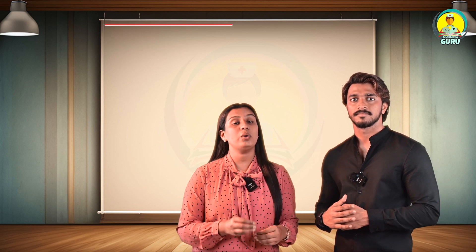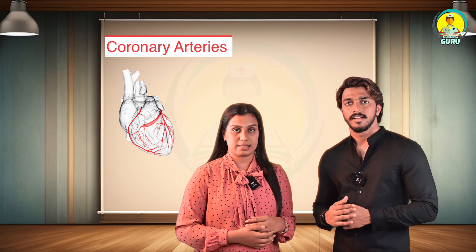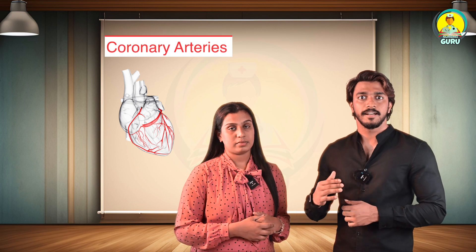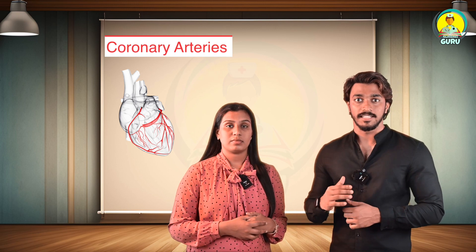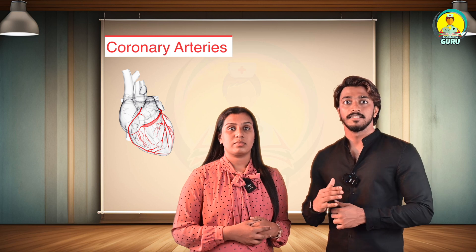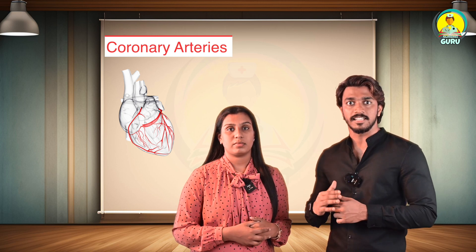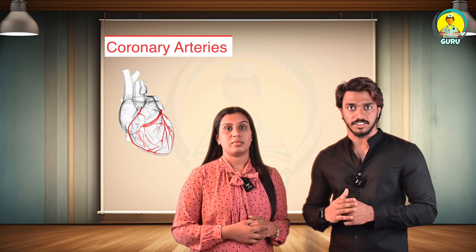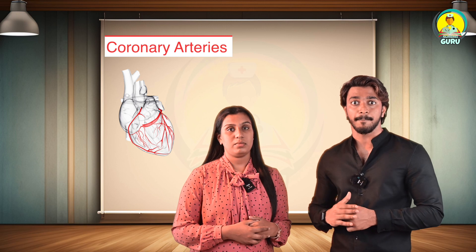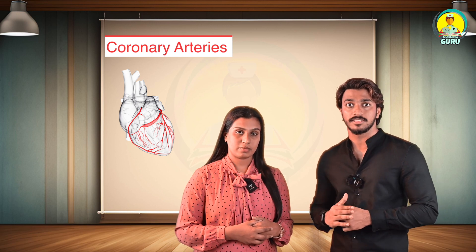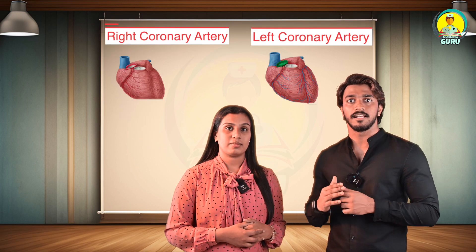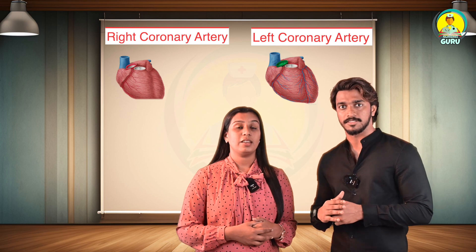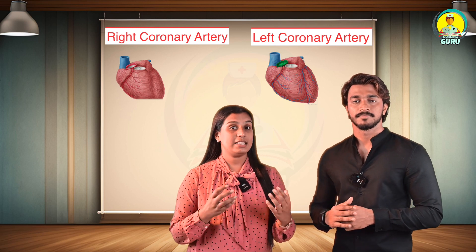An important portion is the blood supply of the heart. The coronary arteries supply blood to the heart muscle. Like all other tissues in the body, the heart muscle needs oxygen-rich blood to function. The coronary arteries wrap around the outside of the heart. The two main coronary arteries are the left and the right coronary arteries.